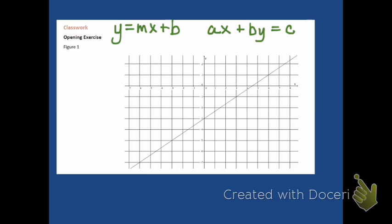In order to write this equation in slope-intercept form, all we need to be able to do is determine what m and b are — what the slope is and what the y-intercept is — and then we can use this form to write it. So given this line, see if you can come up with both what m equals for this line and what b, the y-intercept, is. In order to do that, we're going to need to determine a couple of good points on this line.